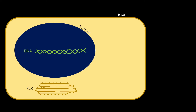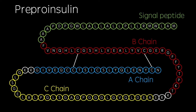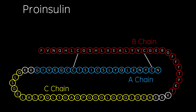First, pre-pro-insulin mRNA is transcribed and translated in beta cells. This consists of chains A, B and C and a signal peptide, with the A and B chains connected by two disulfide bonds. When entering its secretory vesicle, the signal peptide is cleaved, producing pro-insulin.